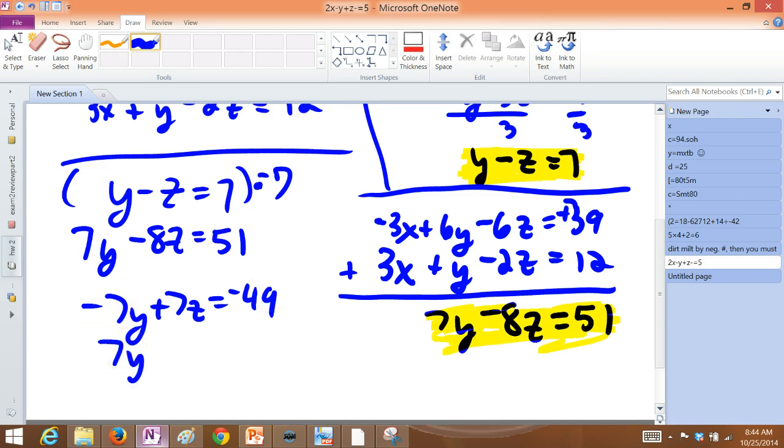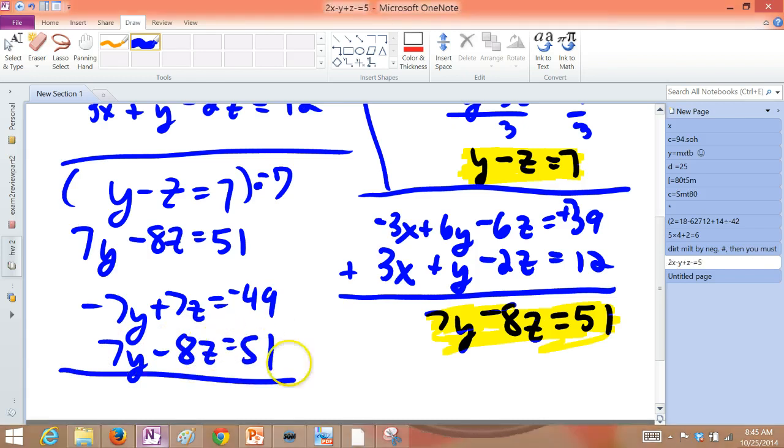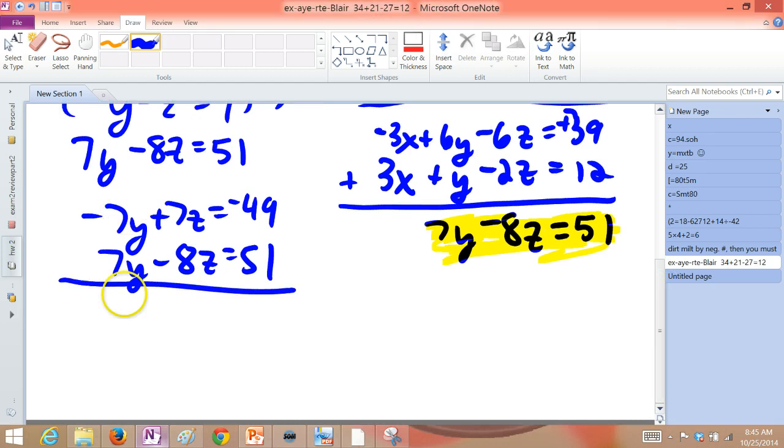The second equation, unaltered, is 7y minus 8z is 51. And so then we add these guys to get exactly what z is. The y's are gone now.